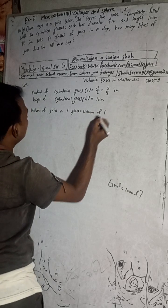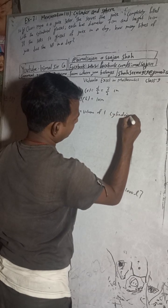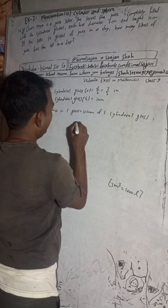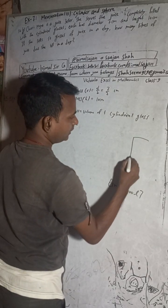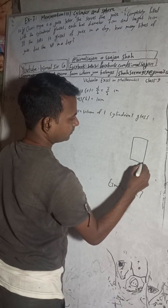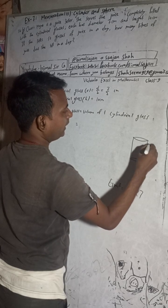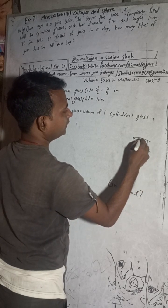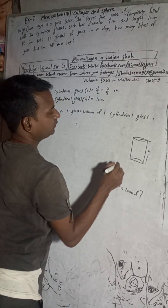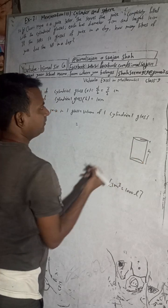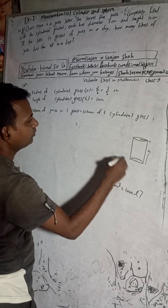Volume of juice in one glass is equal to volume of one cylindrical glass. Suppose this is a glass of a cylindrical shape — it has height 7 cm and diameter 7 cm, so radius is 7 by 2, that is 3.5 cm. Now the volume formula for a cylinder is pi r squared h.